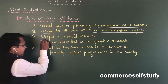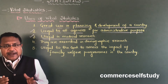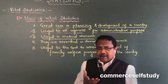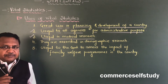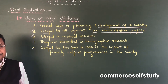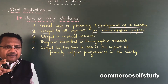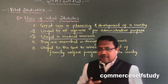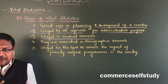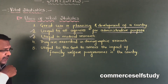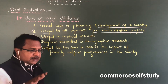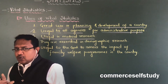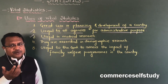The third use is: vital statistics is useful in medical research. In other countries, the average life of a human being is around 75 to 80 years, while in our country the average life is 65. Why is the life expectancy in other countries more than in India? Researchers study lifestyle, food conditions, and health conditions — what kind of food people consume. Vital statistics is useful for all this medical research.